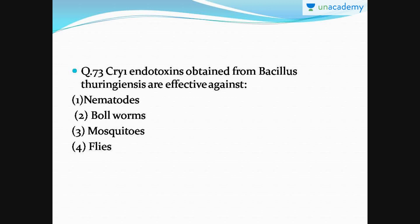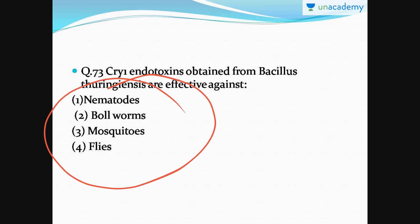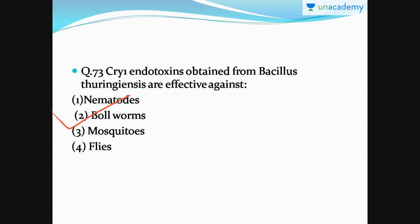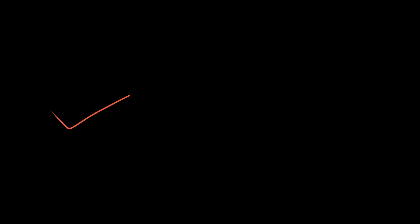Next question: Cry1 endotoxins obtained from Bacillus thuringiensis are effective against which of the following organisms? Out of the four given organisms, option number two — bollworms — is correct. This point is given in NCERT and is very important. Cry1Ab is effective against corn borer, Cry1Ac is effective against cotton bollworm, and Cry2Ab is also effective against cotton bollworm. Please note these down.